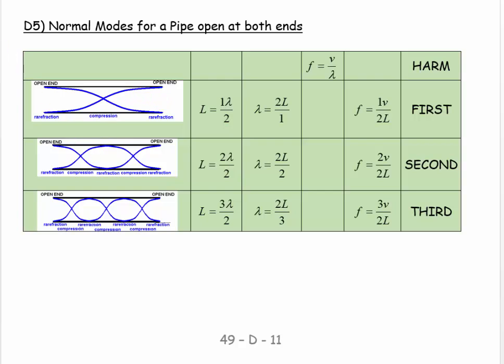So the rules for this instrument are we have an anti-node at each end. And then how do we draw these patterns? Draw your wave out. And then you say the simplest pattern goes from one anti-node to the next. And that's what I drew here.